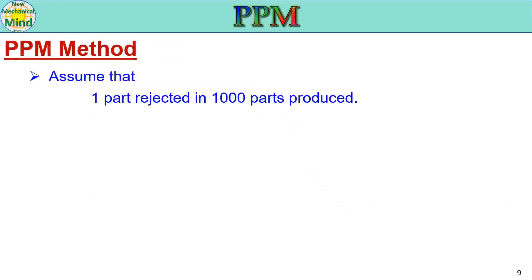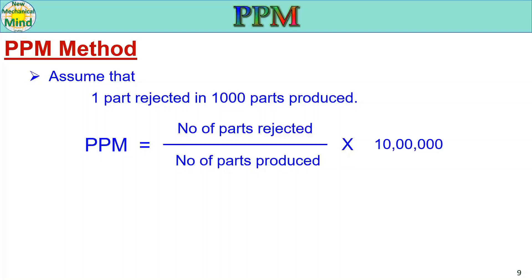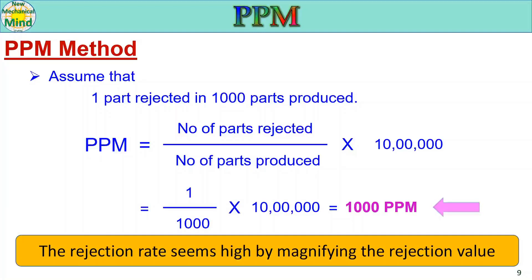PPM method: assume the same rejection quantity — one part rejected in one thousand parts produced. The PPM formula is: number of parts rejected divided by number of parts produced, multiplied by 10 lakhs (1 million). The difference between the percentage method and PPM method is this multiplier — percentage uses 100, PPM uses 10 lakhs. Applying the values gives 1,000 PPM. The rejection rate now seems high because PPM magnifies the rejection value — this is the main purpose of the PPM method.